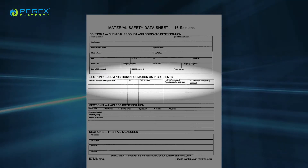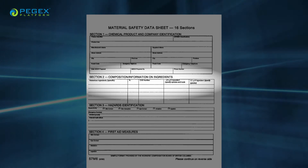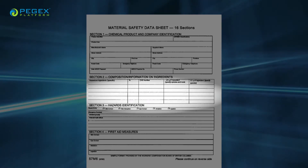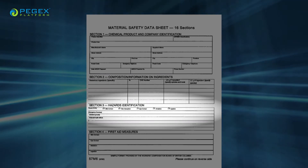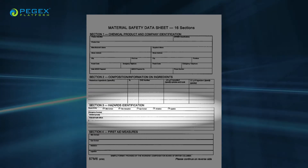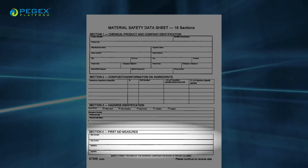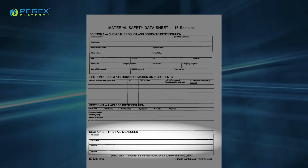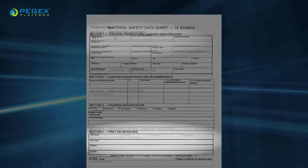Section 2, Composition Information on Ingredients, includes information on the chemical ingredients and trade secret claims. Section 3, Hazards Identification, includes all hazards regarding the chemical and required labeling elements. Section 4, First Aid Measures, includes important symptoms and effects, both acute and delayed, as well as required treatment.